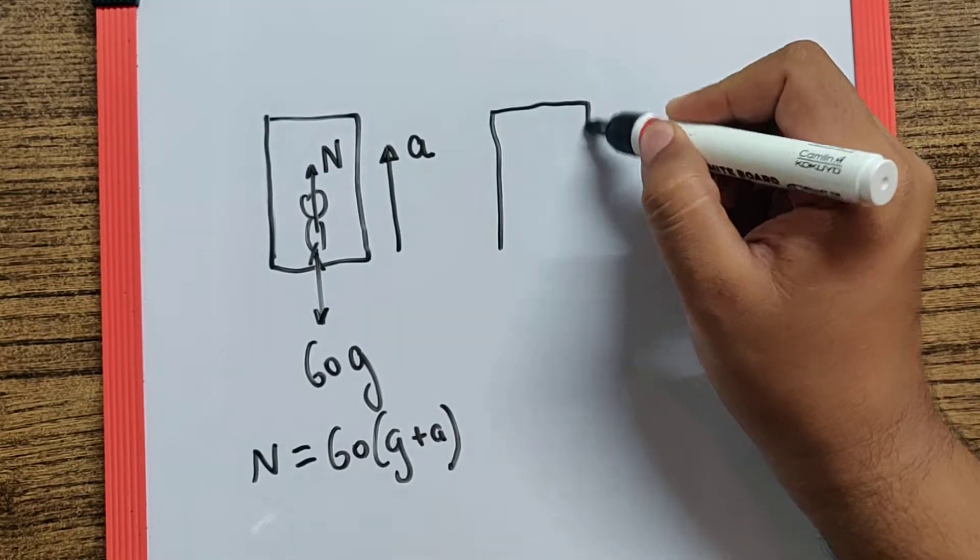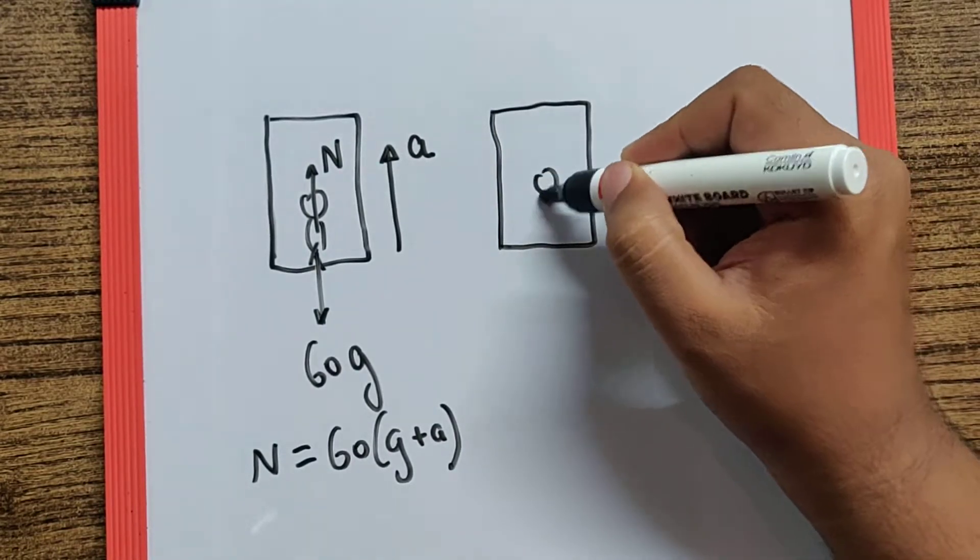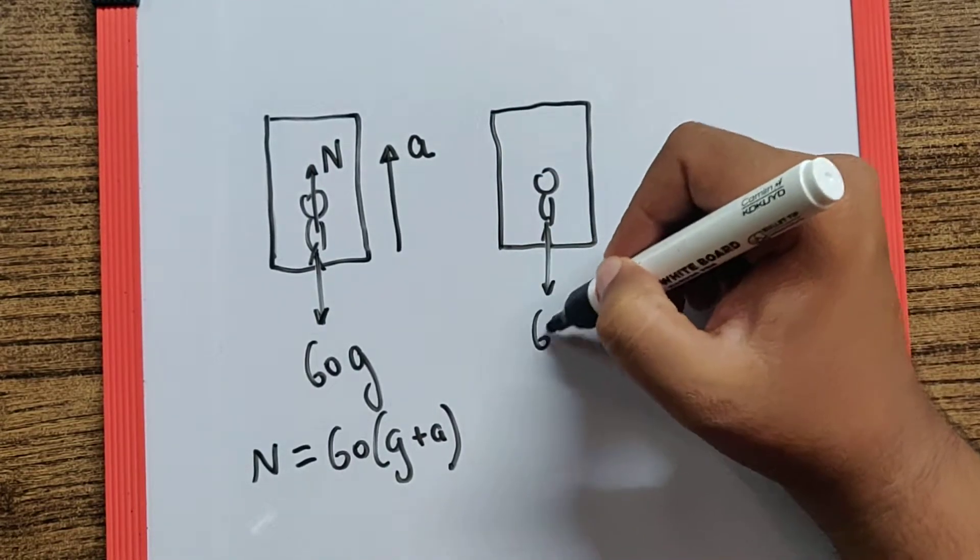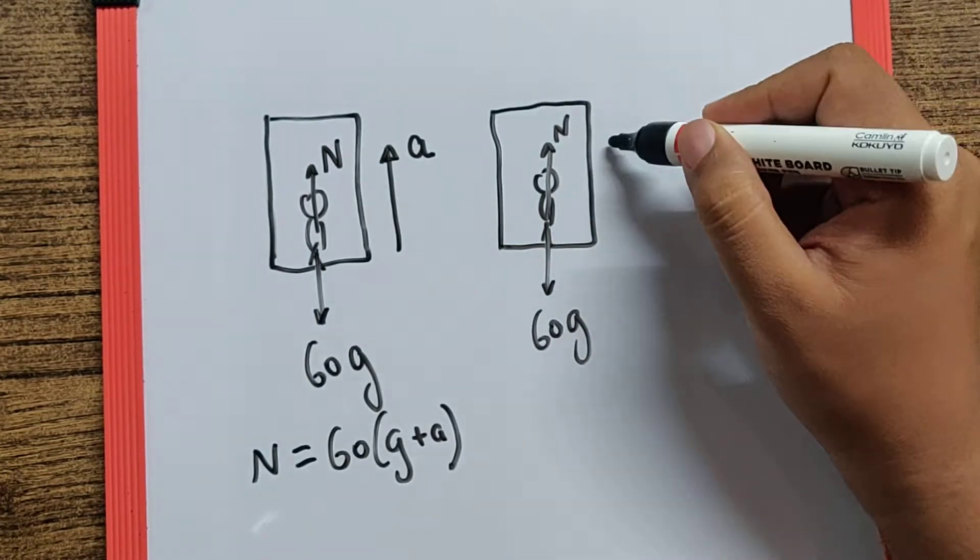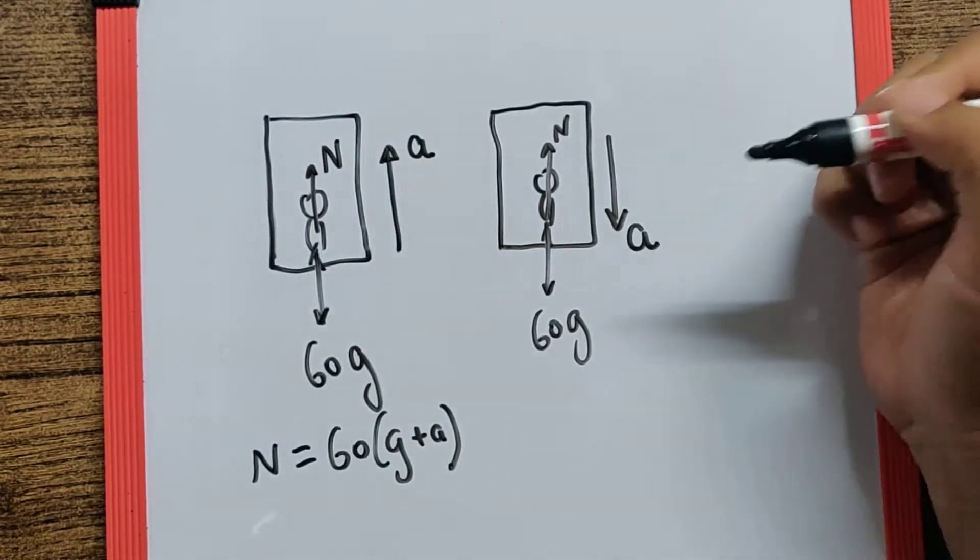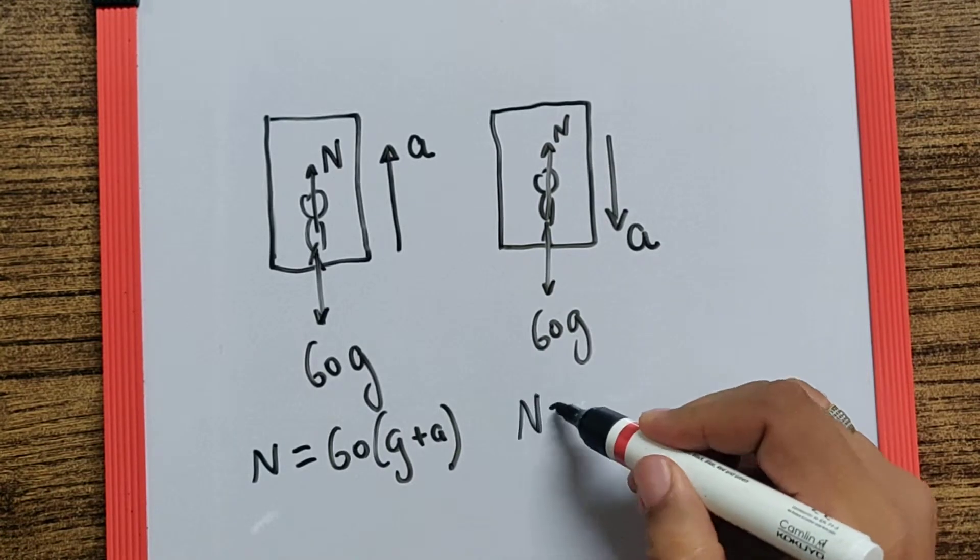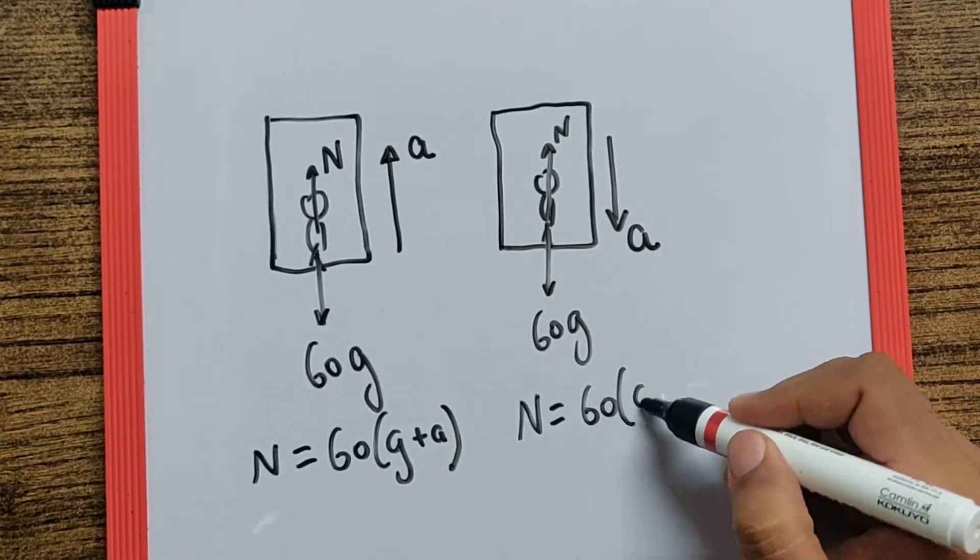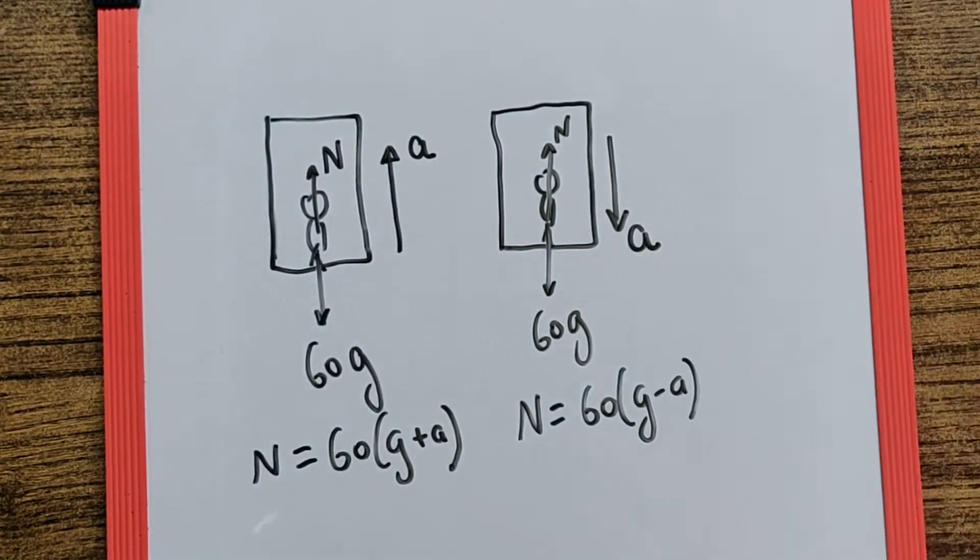Whereas if the lift is moving downwards, which means the 60G is acting downward, normal reaction is upward, and the lift is moving down with an acceleration, then the normal reaction becomes 60 bracket G minus a.